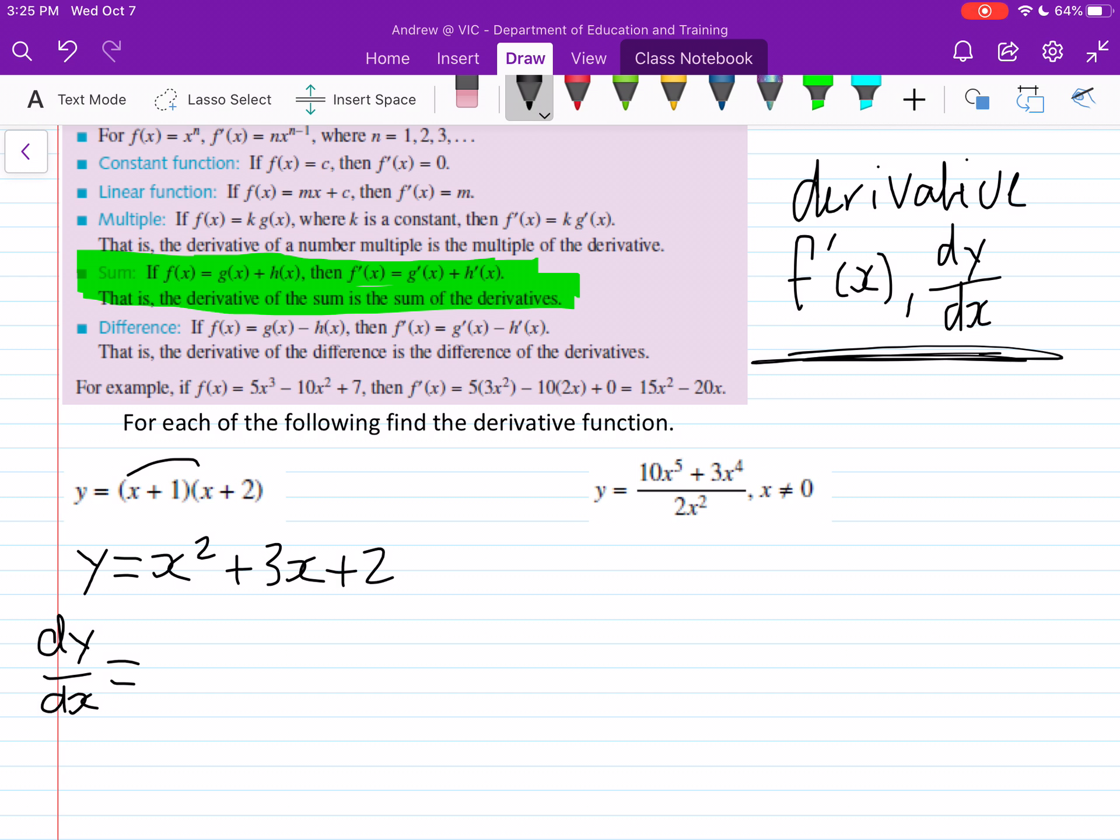So we can then derive each part of this. So this becomes 2 times x to the power of 1, so it's just 2x, plus 3x to the power of 0 which is just 3, and then the 2 cancels out. So that's just left 2x plus 3.